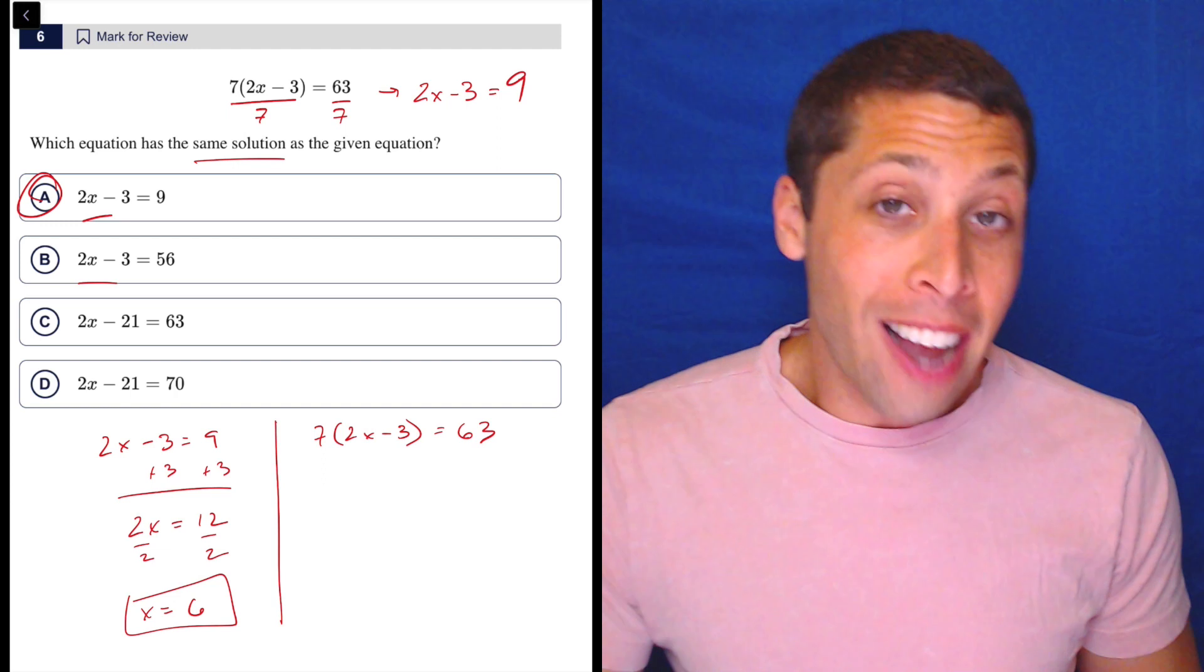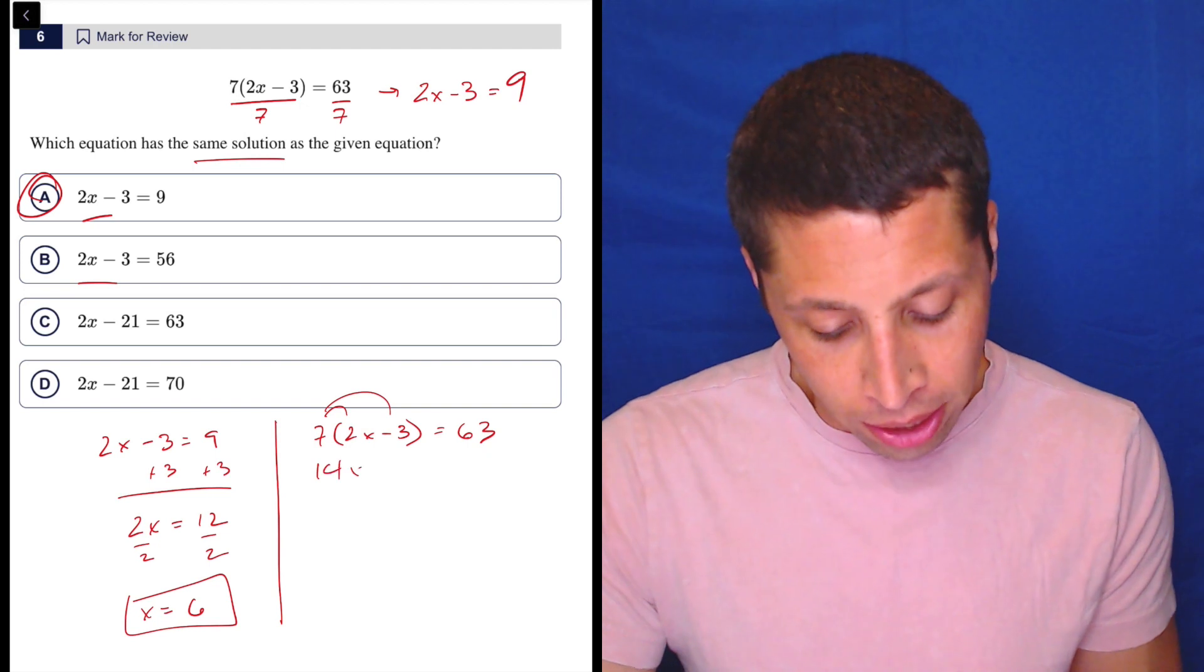Now if we did the same thing to the original equation, and again I think that if you are not really good at math, you're going to do this an even longer way. You're never going to divide by 7. You're just going to multiply that 7 in and you're just going to create big numbers where there's no reason for them. So 14x minus 21 is equal to 63.